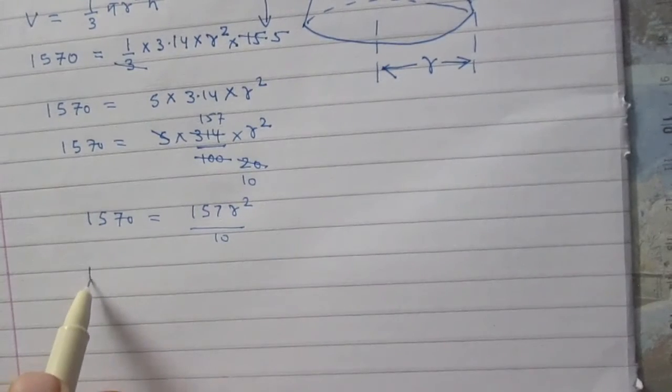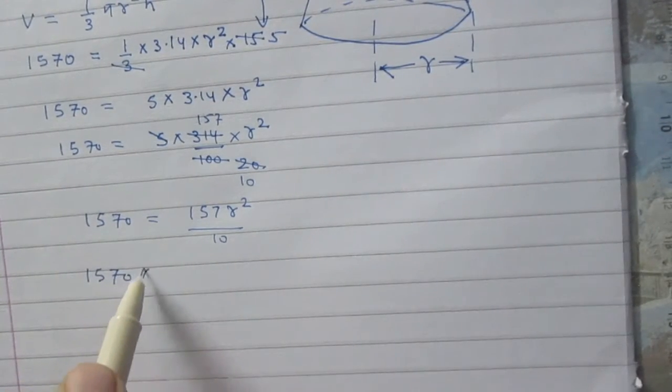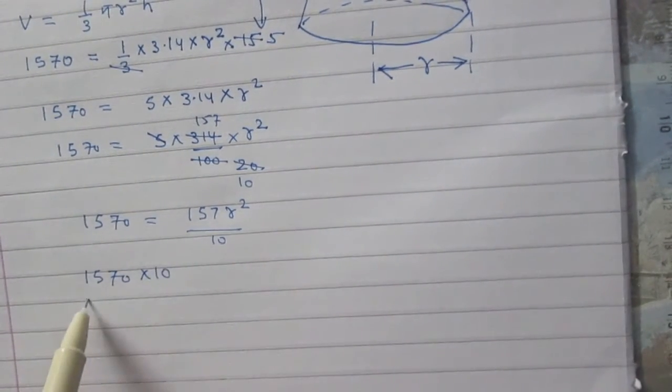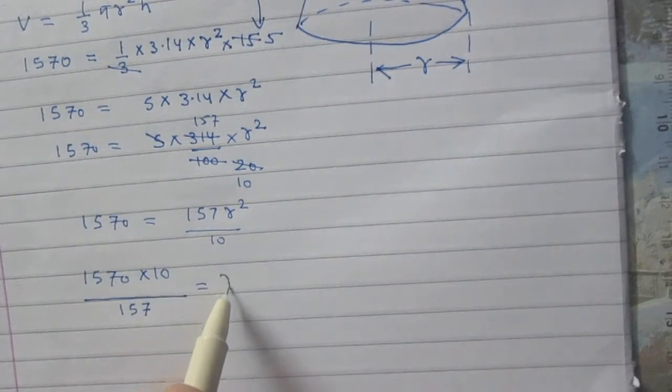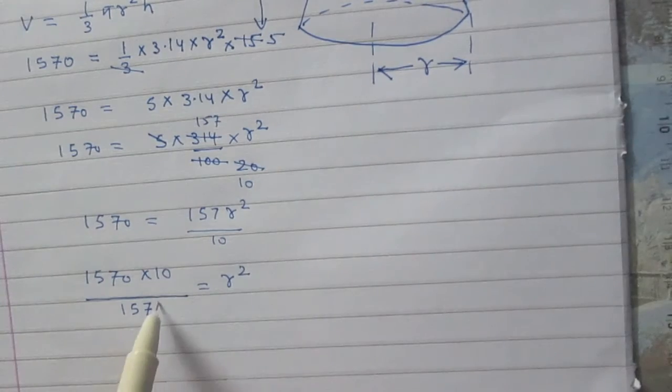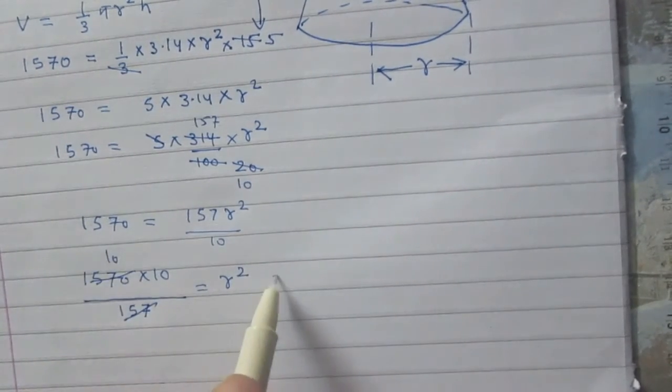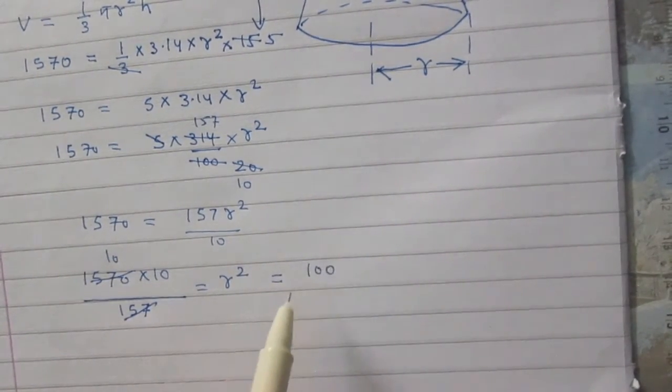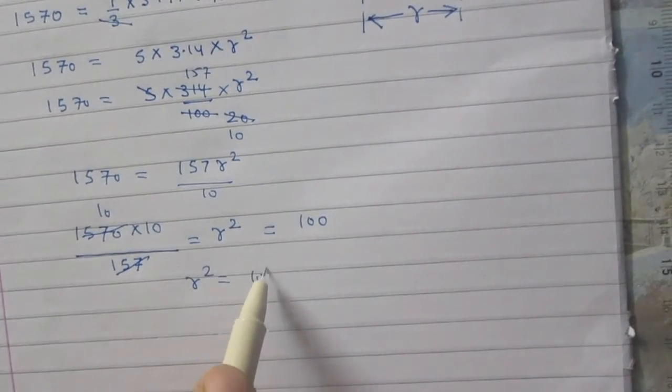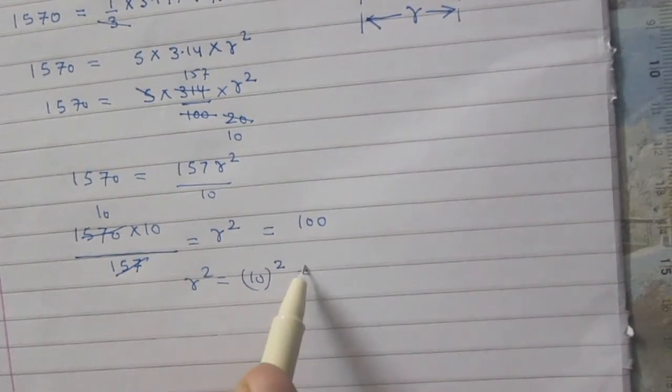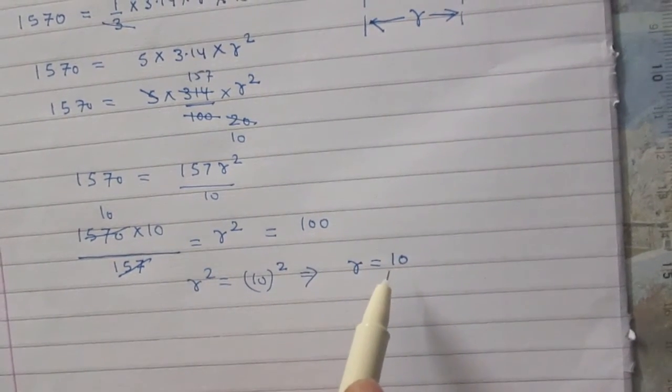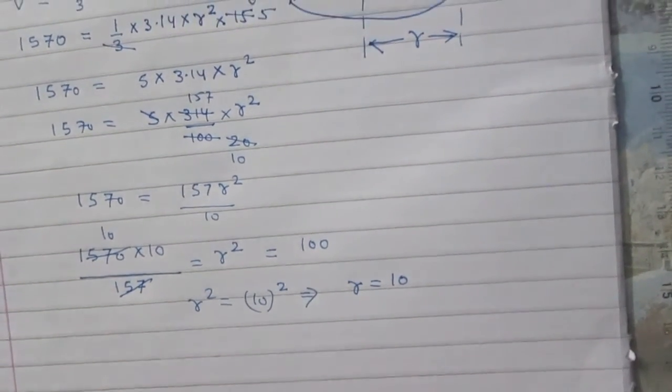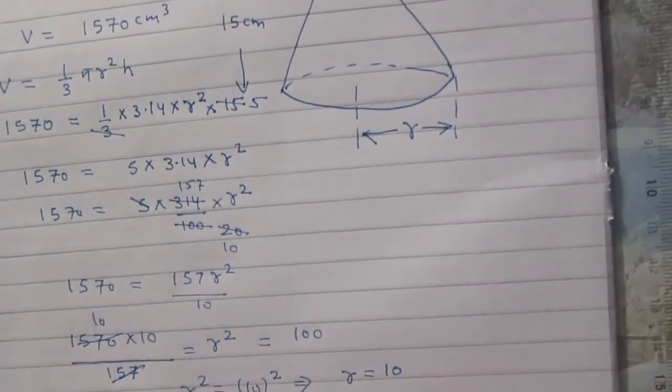Transposing the terms to the other side, we get (1570 × 10)/157 = r². Finally, r² = 100, or r² = 10², so r = 10. The radius of the base of this cone is 10 centimeters.